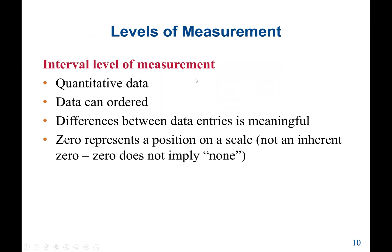Next is the interval level of measurement. Interval level is only quantitative data. The data can be put in order, and the difference between data entries is meaningful — unlike ordinal level. Importantly, zero in interval level represents something but not 'none.' For example, a temperature of zero means it is very cold. But a bank account balance of zero means no money, which would be ratio level.